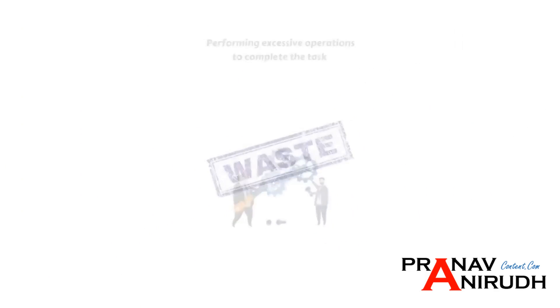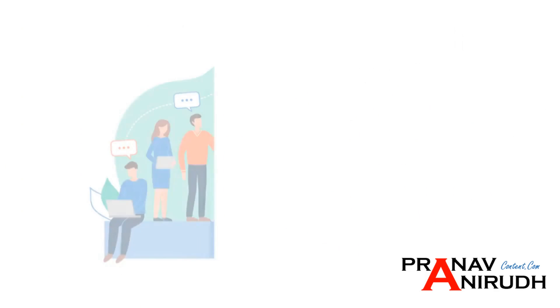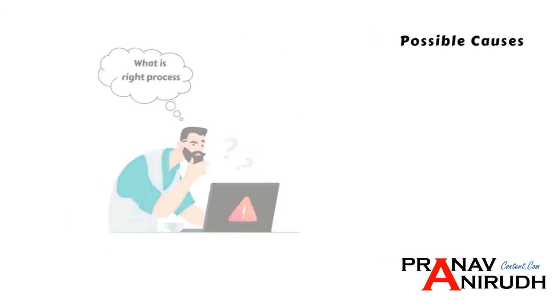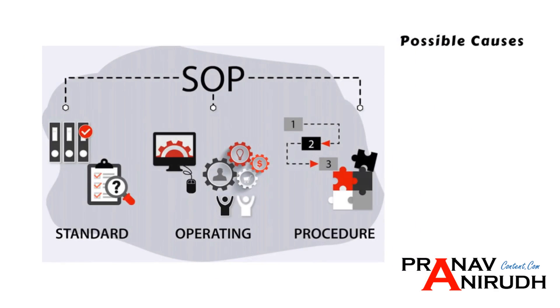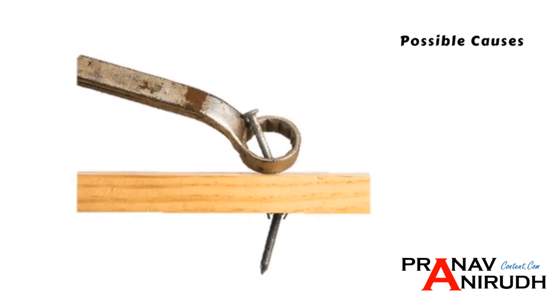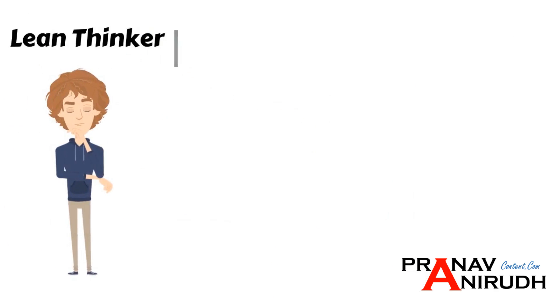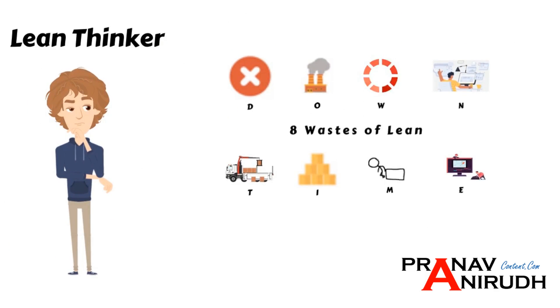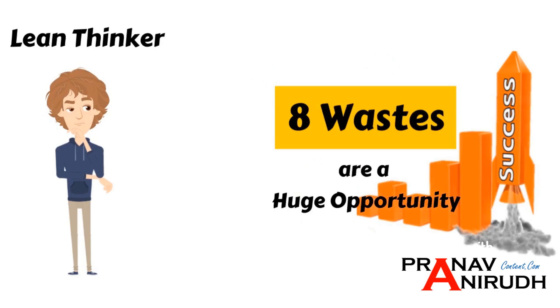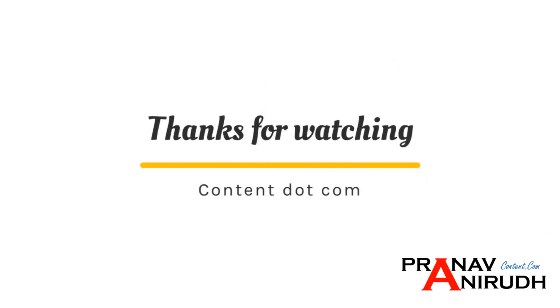The last waste is Excessive Processing. Performing excessive operations to complete a task is a waste — for example, reconfirming product quality at multiple levels. Possible causes include lack of awareness, process not studied, material not produced as required, and improper tools. As a lean thinker, these wastes should not be seen as problems but as a huge opportunity for continuous improvement.